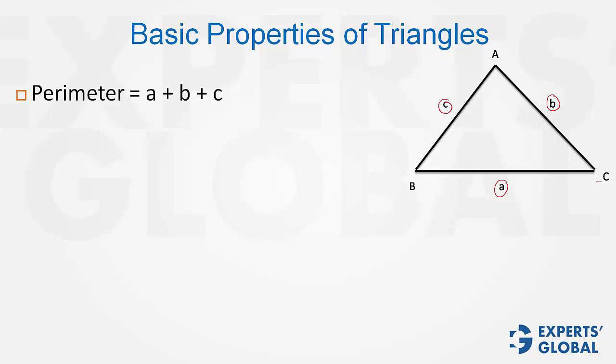The perimeter of the triangle is, of course, the sum of the three sides: a plus b plus c. Area is half base times height.